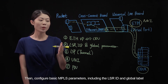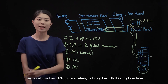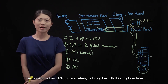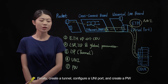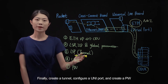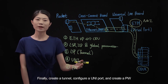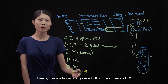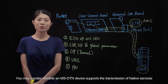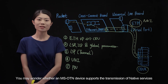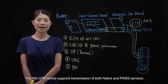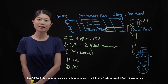Then configure basic MPLS parameters including the LSR ID and global label. Finally, create a tunnel, configure a UNI port, and create a PW. You may wonder whether an MSOTN device supports the transmission of native services — yes, the MSOTN device supports transmission of both native and PWE3 services.